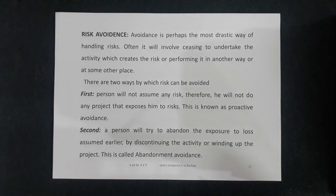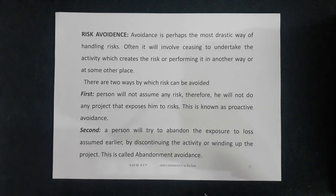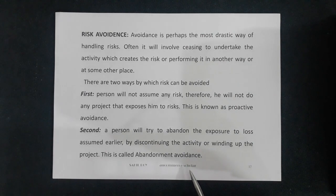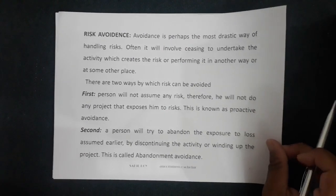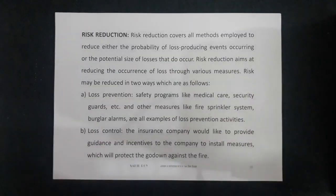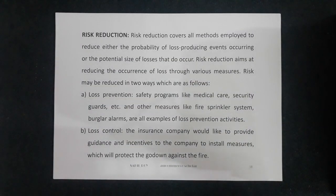To summarize, risk avoidance has two parts: first, where you already know in advance that doing this work will cause loss so you don't start it; second, abandonment avoidance, where you are already doing some work and realize it may cause loss, so at that moment you stop doing it — this is risk avoidance.